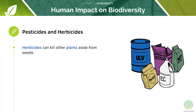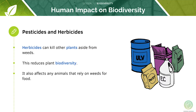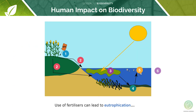Herbicides will kill other plants aside from weeds, which will reduce plant biodiversity and can affect animals that rely on those weeds for food. Using fertilisers can lead to eutrophication — let's see how this happens.